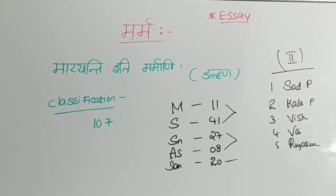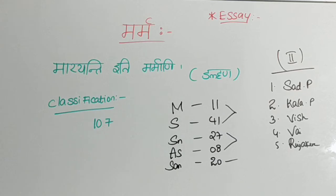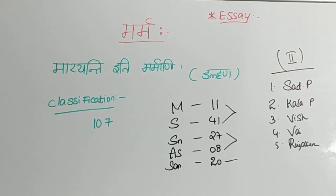The definition of Marma is: Marayanthiti Marmani. The reference is Dalhana, who is a commentator. He explained Marayanthiti Marmani as: the part of a body which leads to death due to an injury — that is, if a point is subjected to an injury and it causes death to a person, that point is considered as Marma.